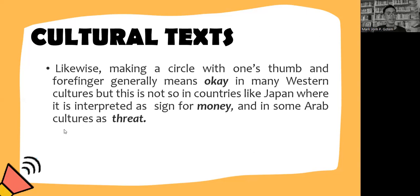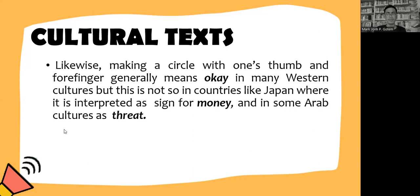We should be aware of bodily gestures and emotions depending on the context and environment. What may be good in one culture may be bad in another. Likewise, making a circle with one thumb and four fingers generally means 'okay' in many Western cultures, but in Japan it is interpreted as a sign for money, and in some Arab countries it is considered a threat. Thus, we should always remember to be careful in using body language, as its meaning varies from culture to culture.